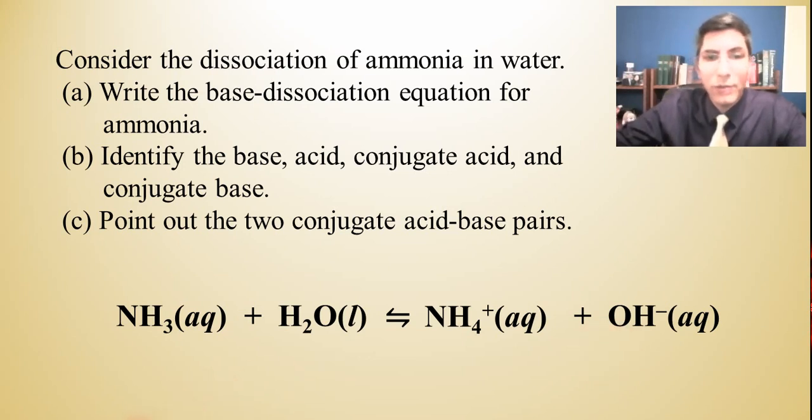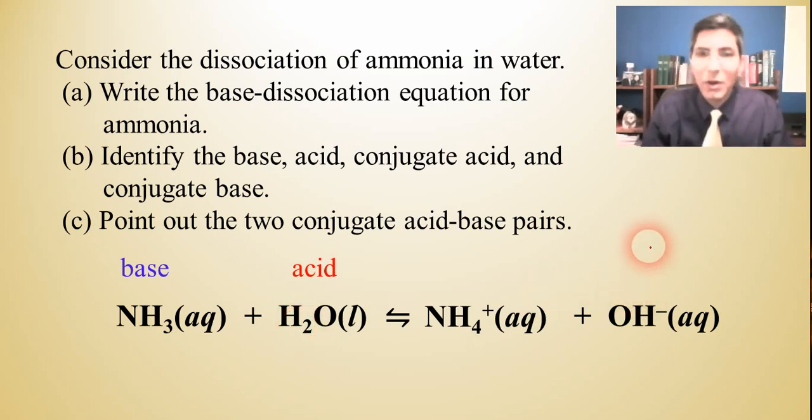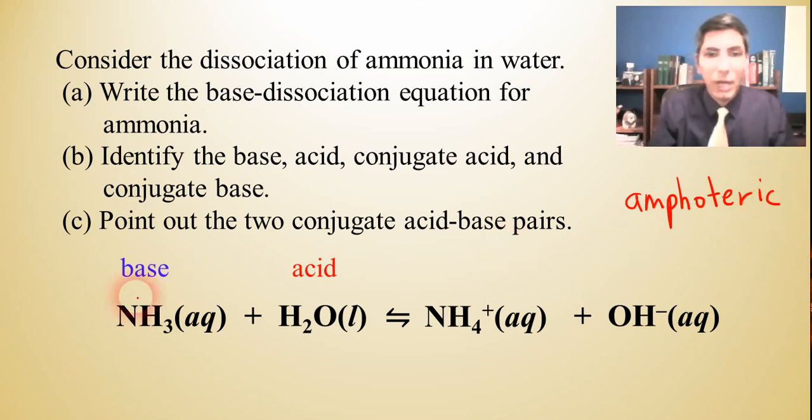So remember, whenever you're writing these Bronsted-Lowry acid and base dissociation equations, if you're dissociating an acid, you should expect to have hydronium as one of the products, H3O+. If you're dissociating a base, you should expect hydroxide to be one of the products, just because it's a base. Now, that's part A. Let's identify the base, the acid, and those other two things there. So the base would be what we started with. So there's our base. And remember, bases react with acid. So that means that water is an acid in this case, isn't it? Now, that's interesting, because a minute ago, we just said that water was a base, right? Well, this time, water is an acid. Anytime you have a substance that can sometimes be an acid and sometimes be a base, we actually have a name for that. That's called amphoteric. And so water is one, probably the most common, of the amphoteric substances. It can act as an acid or as a base. And we'll actually find several others as we go through the next four lessons on acid-base chemistry.